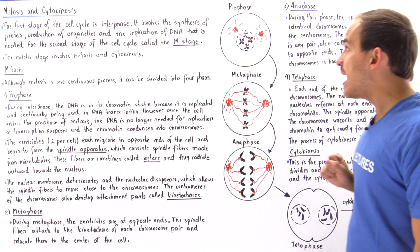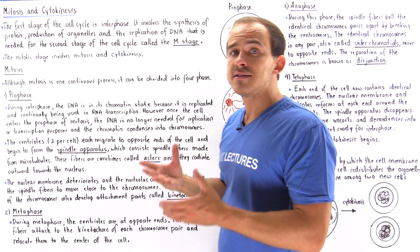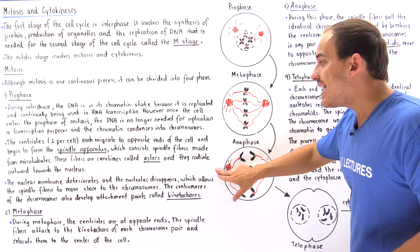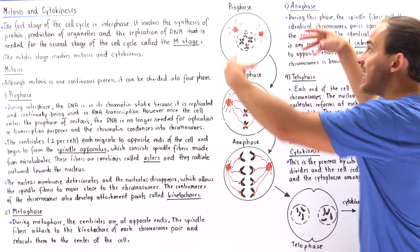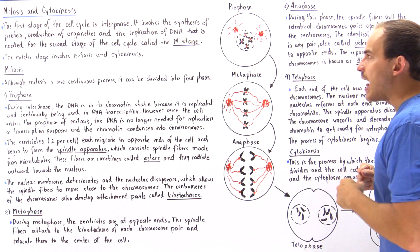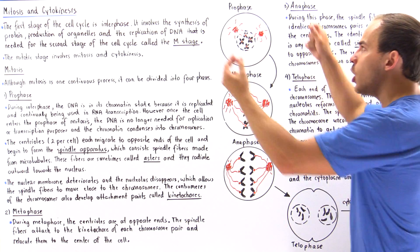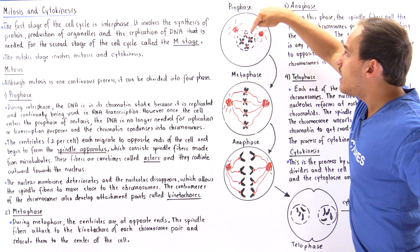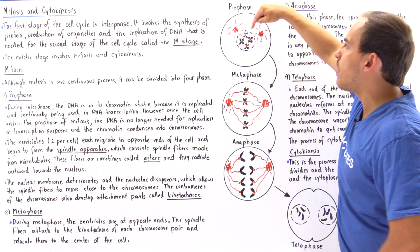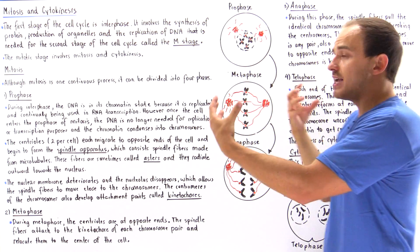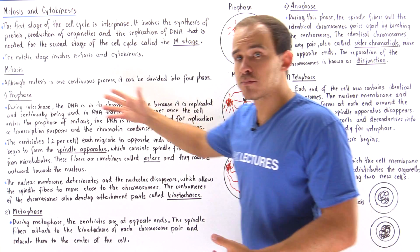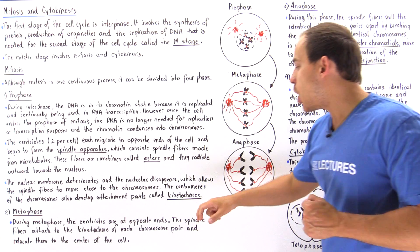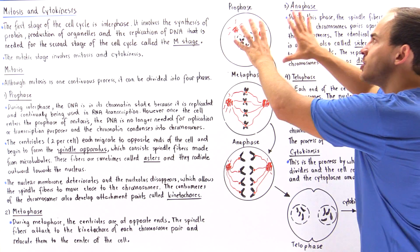At the same time, the nuclear membrane begins to deteriorate and the nucleolus disappears altogether, allowing the spindle fibers to make their way into the nucleus region of the cell. The spindle fibers can then attach to a special region on the centromere. Each chromosome is connected at a region called the centromere, and during prophase the centromeres develop attachment points known as kinetochores. This concludes prophase.